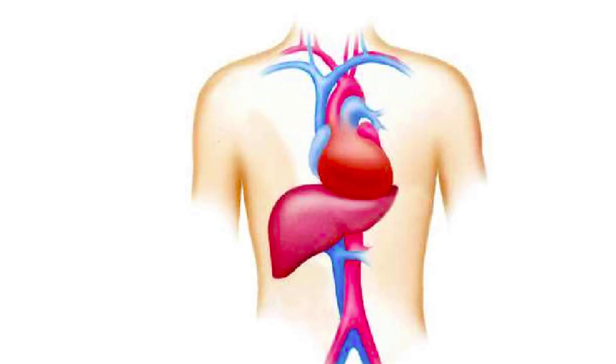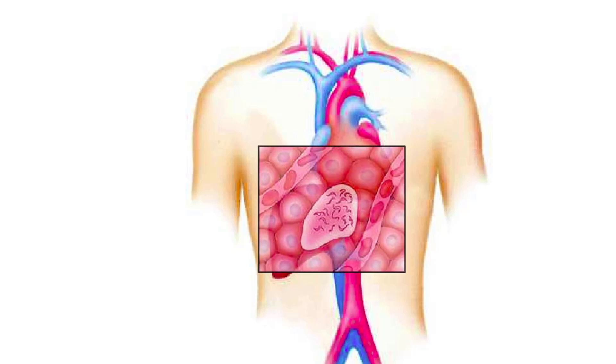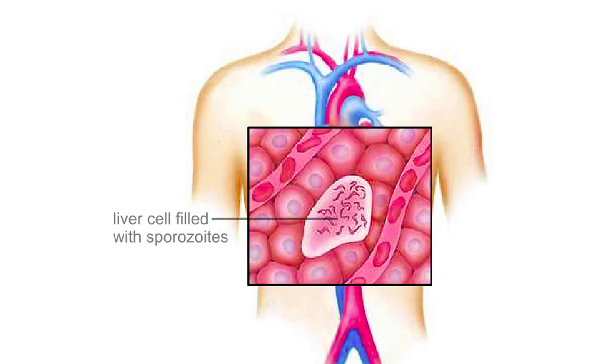The bloodstream carries the sporozoites to the liver. Here, they reproduce asexually, and some develop into merozoites.